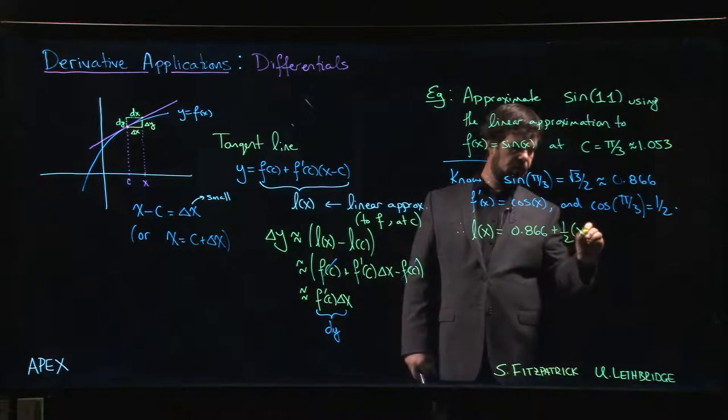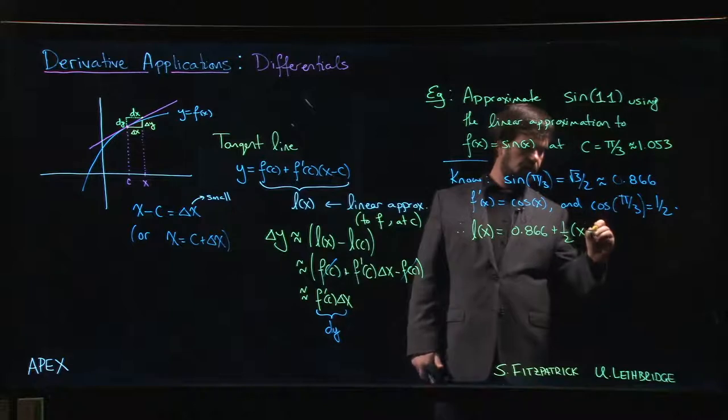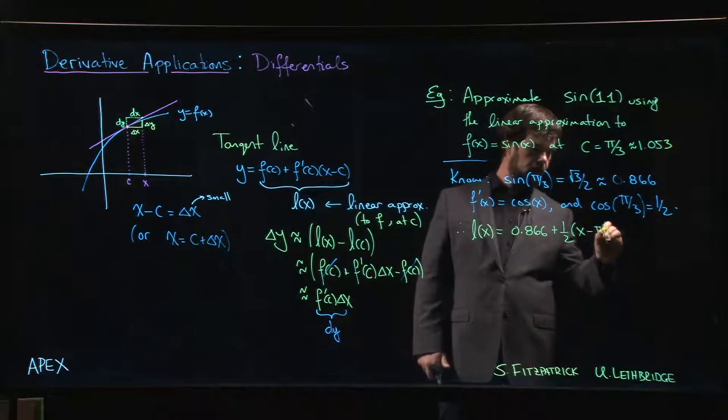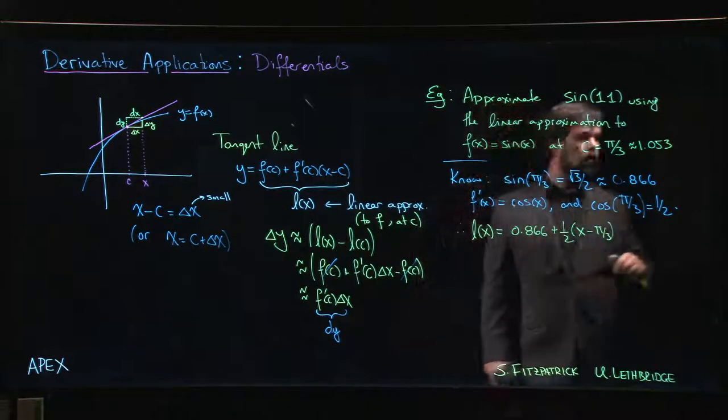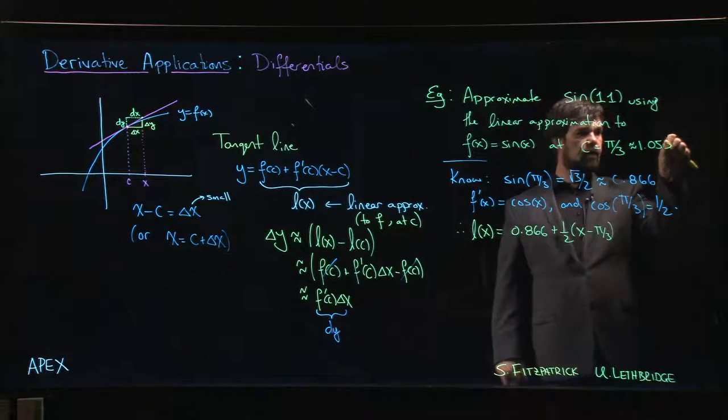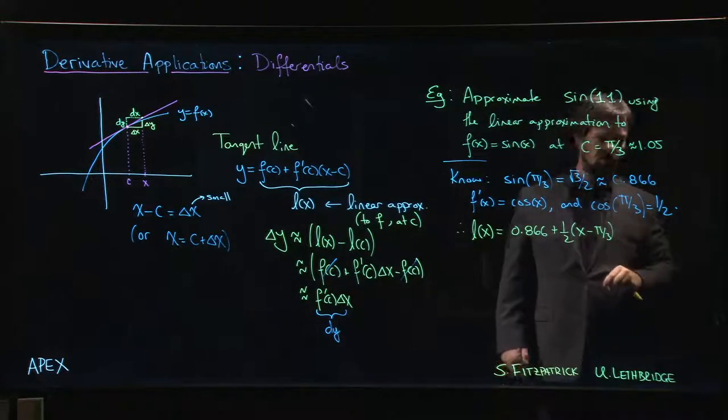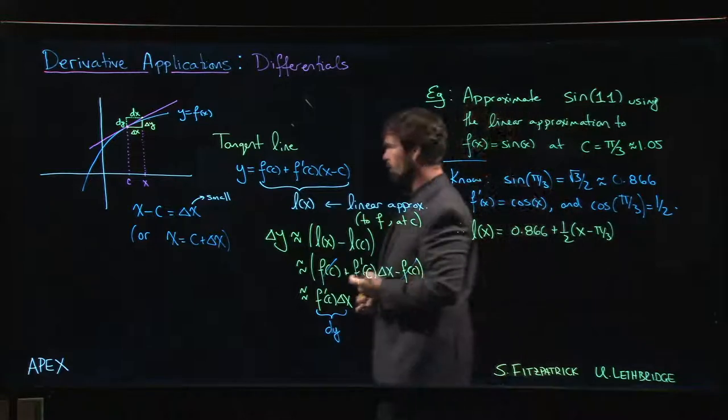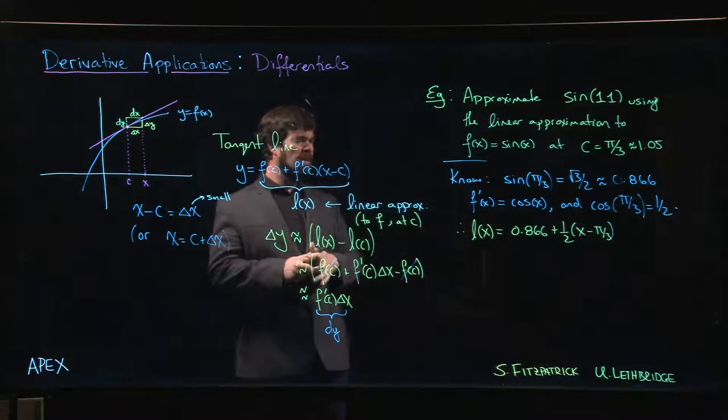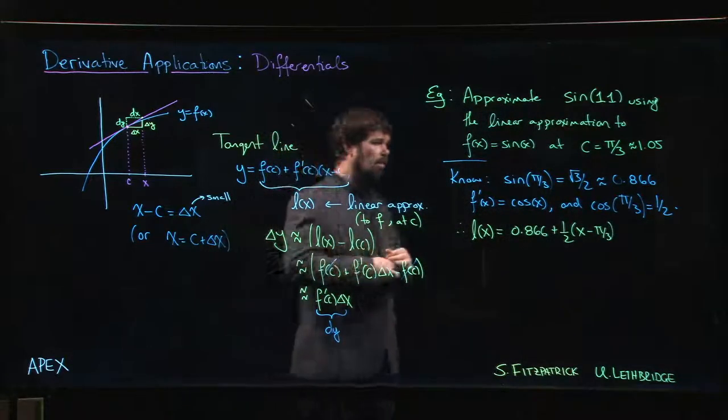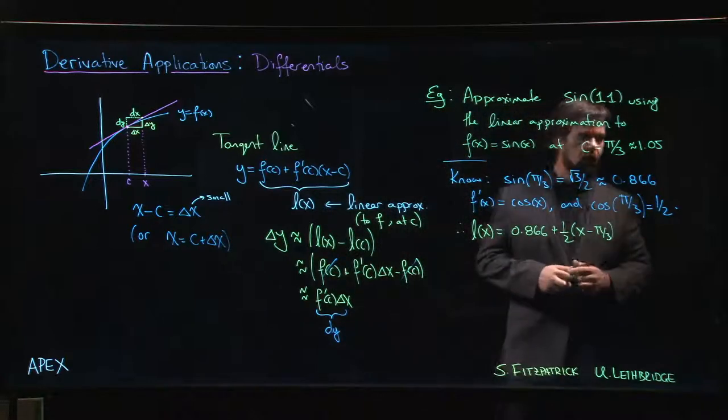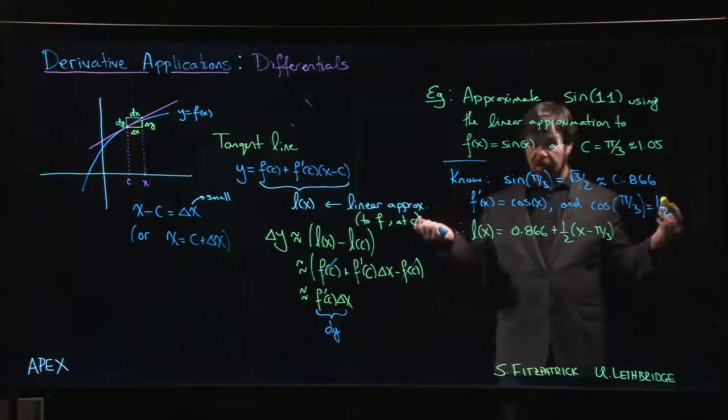Let's just put that in. Let's put in our decimal value 0.866, plus one-half times x minus pi over three. Oh, you know this is not quite right. It goes the other direction. It's 1.047 maybe.